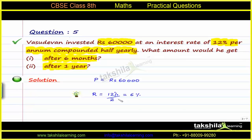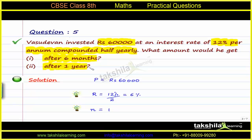When compound interest is compounded half yearly, we divide the rate of interest by 2, so the rate becomes 6%. For the first part — amount after 6 months — the time period N is taken as 1, because 6 months means 1 half year. For 1 year, N would be 2 because in 1 year there are 2 half years.